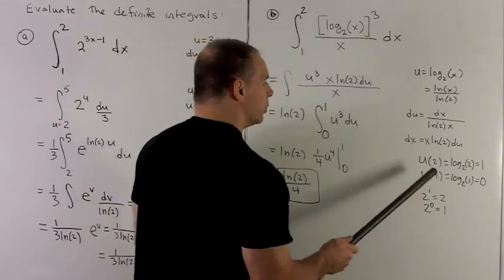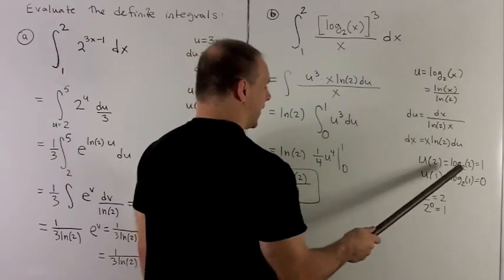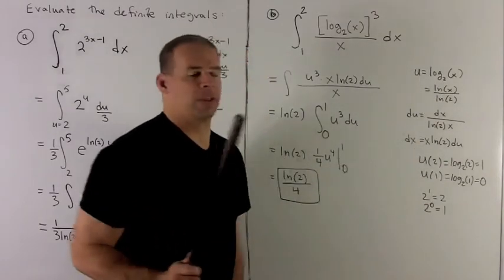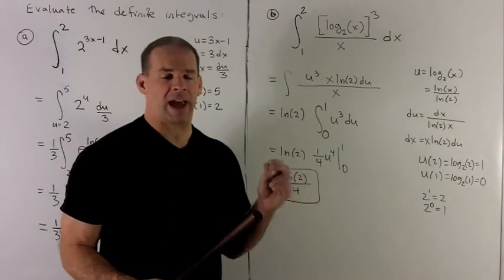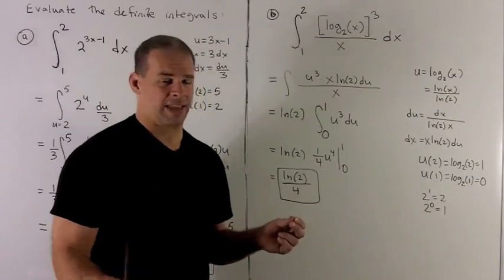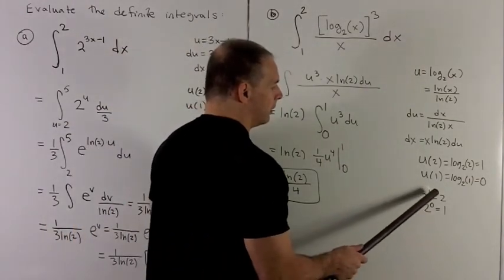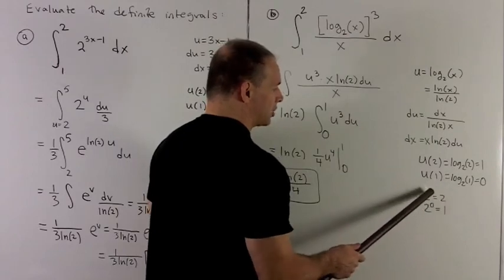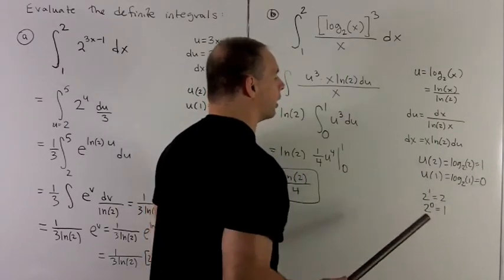So, u of 2 is equal to log base 2 of 2. That's equal to 1. What's happening with logarithm? It takes a base, it takes a number, and it tells you the exponent that you put over the base to get that number coming out. So in this case, we have 2 to the 1 is equal to 2. The exponent is a 1, so that's going to translate into a 1 over here.